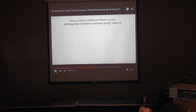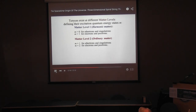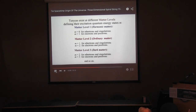Torexes exist at different matter levels, defining their excitation quantum energy states M. For matter level 1, harmonic matter, M equals 0 for ethertrons and cingulatrons, and M equals 1 for electrons and positrons. For matter level 2, ordinary dynamic matter, the respective periods of M are 1 and 2. For matter level 3, dark matter, the respective periods of M are 2 and 3, and so on.